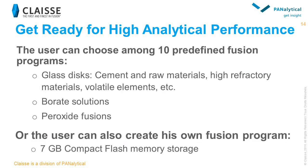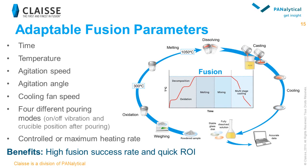The Deox Advanced is shipped with 10 preset fusion programs for the most common samples, such as cement and raw materials, high refractory materials, volatile elements, and a wide range of oxides. However, if needed, the user can easily create new programs or adapt existing ones from the multi-language touch screen interface. The new programs are stored in the 7 GB compact flash memory of the instrument. Fusion parameters such as temperature, agitation speed, duration of the different fusion steps, fan speed, and remaining time display can all be adjusted to prepare samples for a wide range of applications.